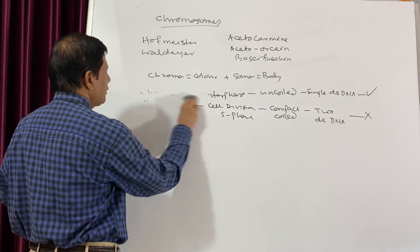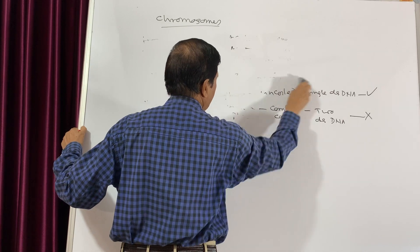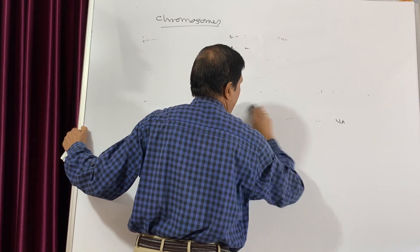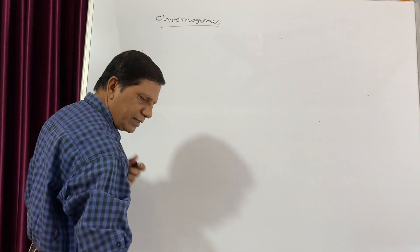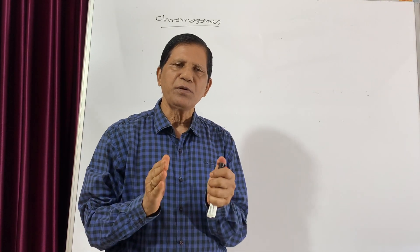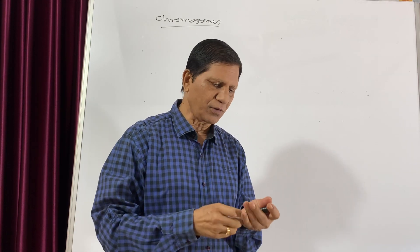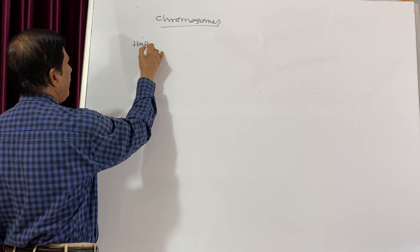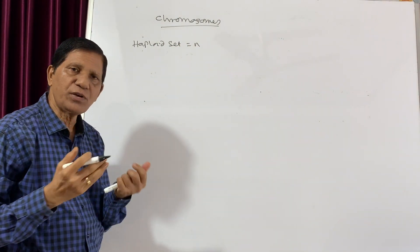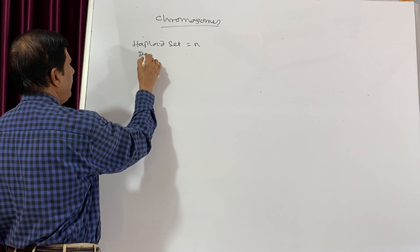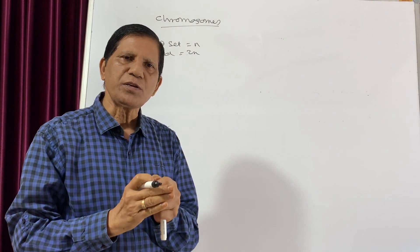Now we will discuss the details of the chromosome — first the number, then the size, and the shape. The number of chromosomes in a particular species is always constant. The haploid set of chromosomes is known as N. In all sexually reproducing organisms, which are diploids, it is usually known as 2N number of chromosomes, and the 2N number is always fixed.